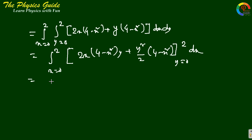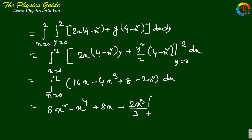This equals the integral from 0 to 2 of (16x - 4x³ + 8 - 2x²)dx, which after integration gives 8x² - x⁴ + 8x - 2x³/3, evaluated from 0 to 2, giving us 80/3 as our answer.